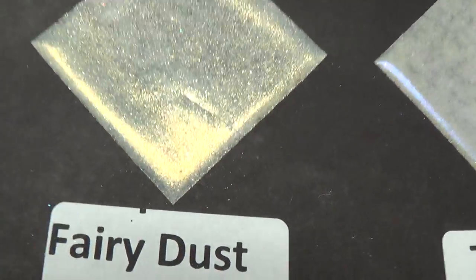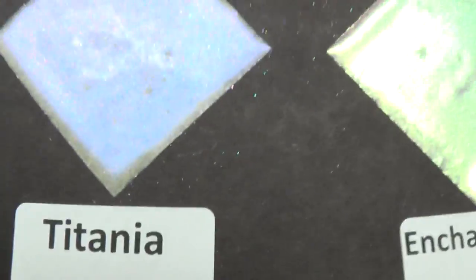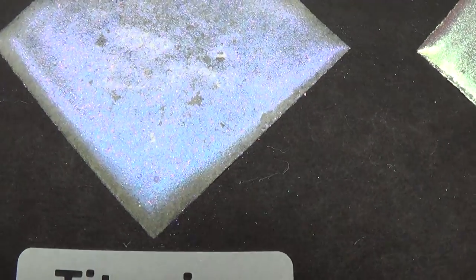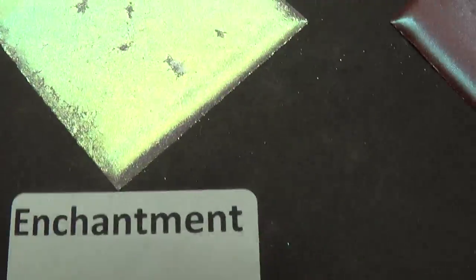On black card stock, you can tell it has a mostly goldish tinge. Then we have Titanium, which is more of a violet purplish tinge.